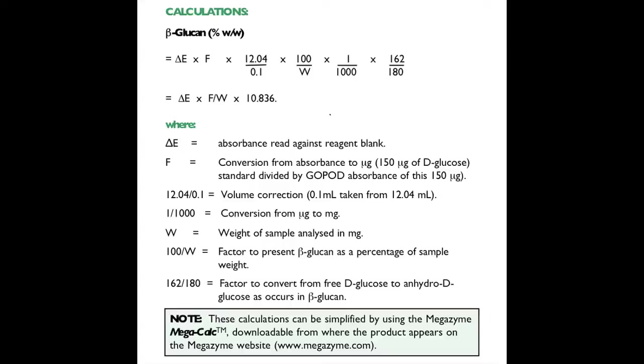The beta-glucan content of the sample is calculated as shown in the equation here, where ΔE is the absorbance read against the reagent blank. F is the conversion from absorbance to micrograms, that's 150 micrograms of D-glucose divided by the GOPOD absorbance for this amount of glucose. 12.04 over 0.1 is the volume correction; 0.1 mL is taken from 12.04 mL for the analysis. 1 over 1,000 is conversion from micrograms to milligrams.